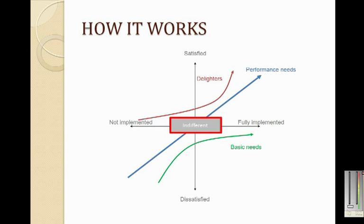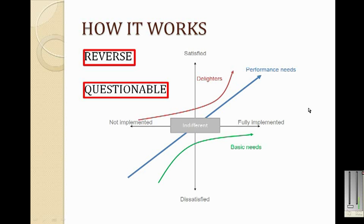Whether you want to add or discard those neutral features, the user does not have any objection. Besides what is presented in the graph, there are two more categories. The first is 'reverse,' which represents features that the user does not want to have in the system. The second is 'questionable,' which represents features whose categorization is unclear.